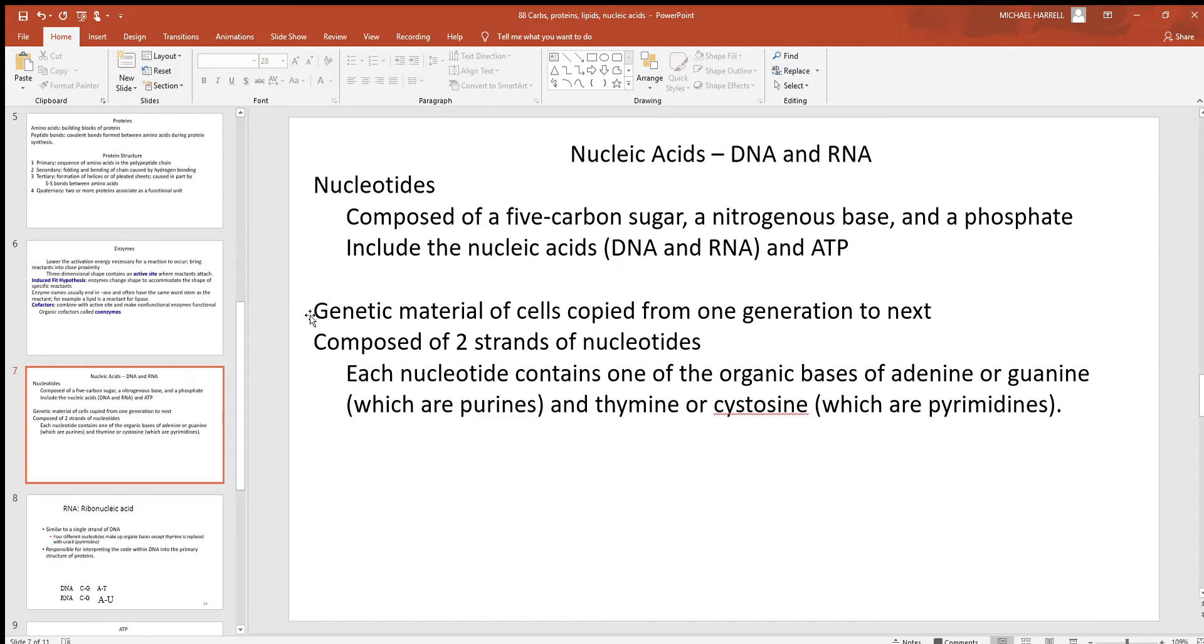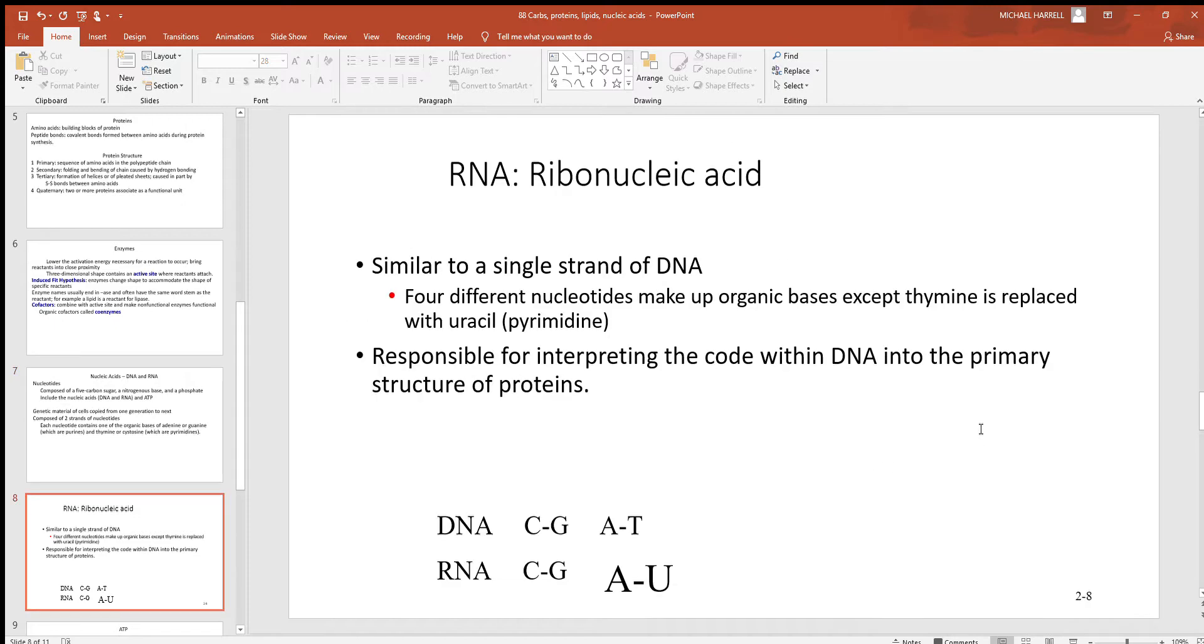You've all heard about this and hear about genetics and genes and how information is passed from one generation to the next. We'll take a closer look at that in other places, especially in chapter three on the cell. But these are composed of two strands of nucleotides. Now if you look at each nucleotide, it contains one of the organic bases: adenine or guanine, collectively those are what's called the purines, or thymine and cytosine, which those are collectively called the pyrimidines.